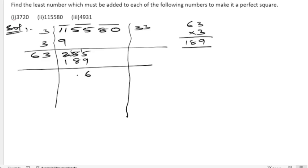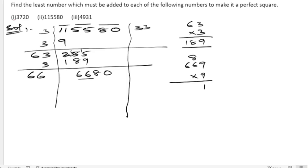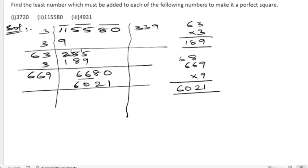The remainder: 14 minus 9 is 6 (wait: 15 minus 9 is 6) and 14 minus 8 is 6. Bring down 80. Three comes again, six plus three is 6. We need the nearest number; try nine: six six nine into nine — nine nines are 81, nine sixes are 54 plus 8 is 62, giving us 6021. The result exceeds, so we stop here.